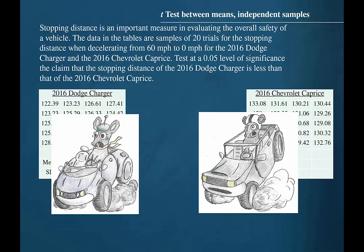Stopping distance is an important measure in evaluating the overall safety of a vehicle. The data in the tables are samples of 20 trials for the stopping distance when decelerating from 60 mph to 0 mph for the 2016 Dodge Charger and the 2016 Chevrolet Caprice. Test at a 0.05 level of significance the claim that the stopping distance of the 2016 Dodge Charger is less than that of the 2016 Chevrolet Caprice.